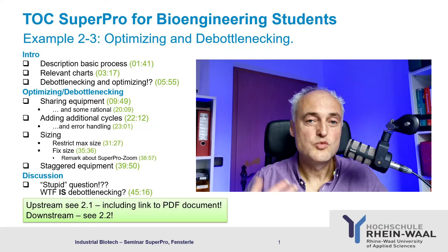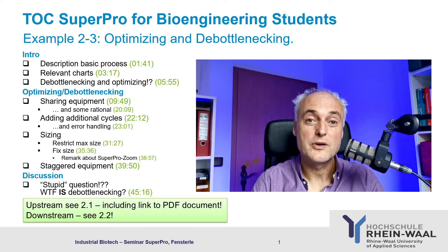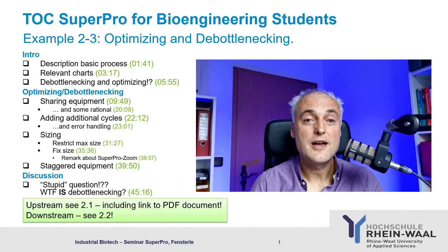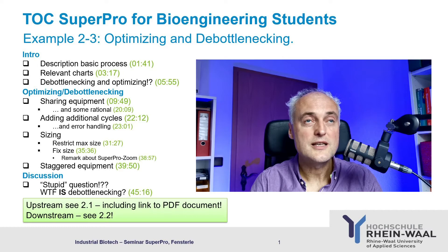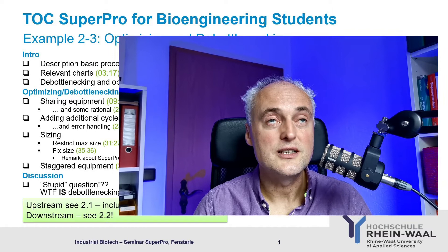One thing is having these features added, but another is optimizing your process for the best economic outcome. Best economic process doesn't necessarily mean the cheapest process — it could mean the highest throughput, or optimizing the centrifuge by using multiple cycles, or finding and circumventing the bottleneck of your process. Today I show you how you can do that.